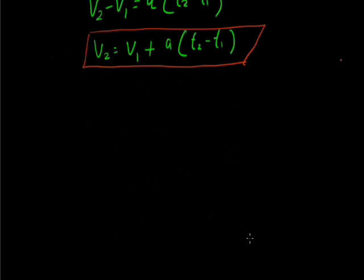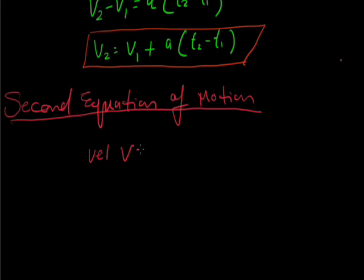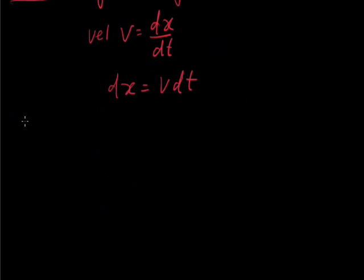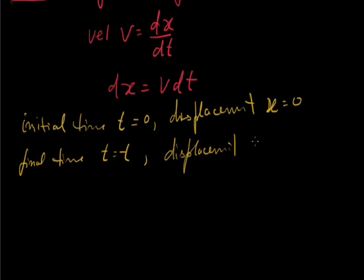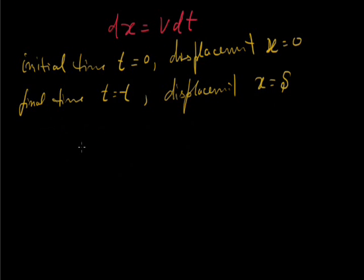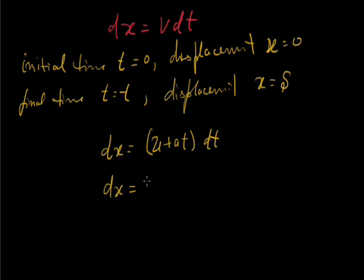Now for the second equation of motion: velocity v equals dx by dt, so dx equals v dt. At initial time t equal to 0, displacement x is 0, and at time t, displacement x equals s. Substituting v equal to u plus at, we get dx equal to u dt plus a·t dt.